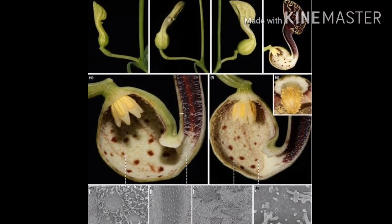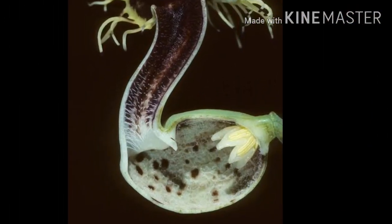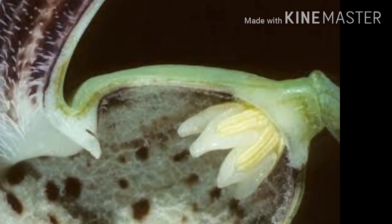Anthers are united or free, with longitudinal dehiscence; filaments are short and thick.